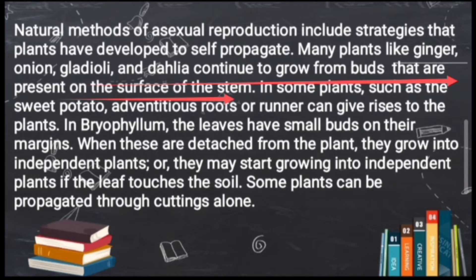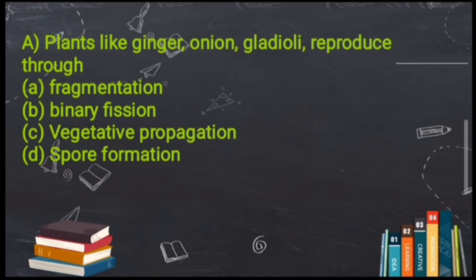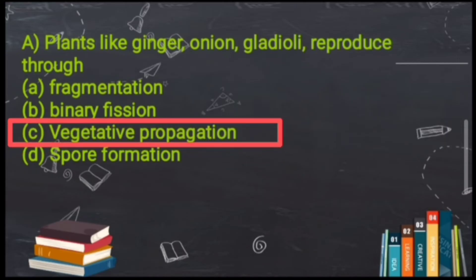So they grow from buds on the stem. In vegetative propagation, we use the vegetative parts of a plant to generate offspring. Here the vegetative part used is the stem — plants grow from buds present on the stem. So option C, vegetative propagation, is the correct answer.